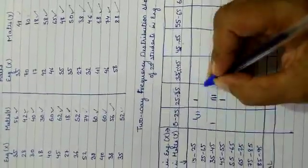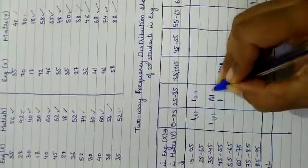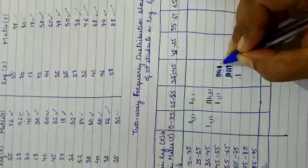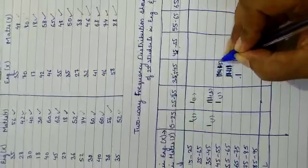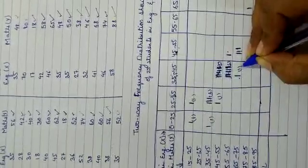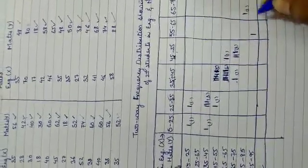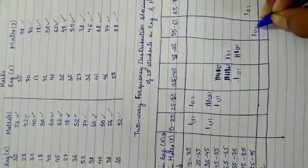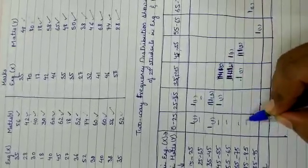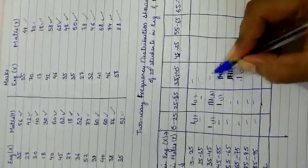Now write down the frequencies by converting the tally marks: 1, 1, 1, 1, 3, 1, 5, 6, 1, 1, 3, 1, and 1. Put a dash in the blank areas of the table.